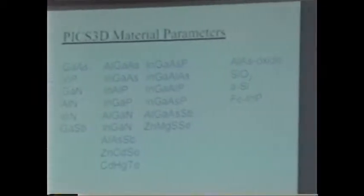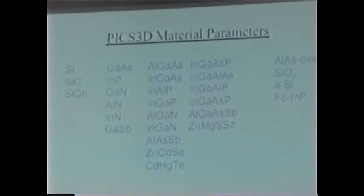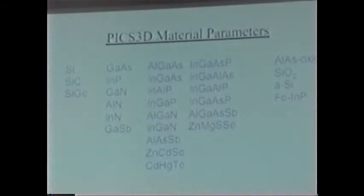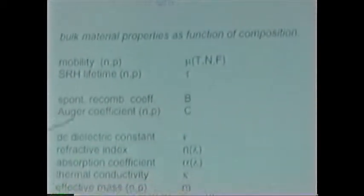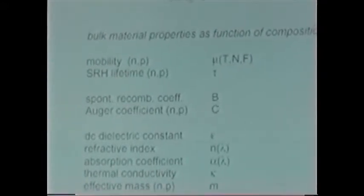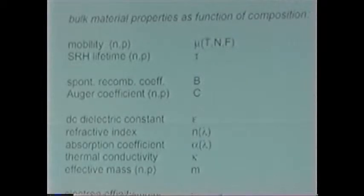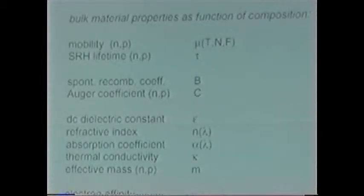Pix3D comes with a large variety of material systems. The manual has about 100 pages of material macros in simple ASCII files. There are default numbers for all materials as a function of composition. I'll now walk through how this is actually structured in the program, using the mobility as an example.